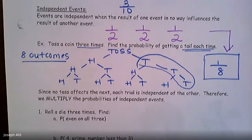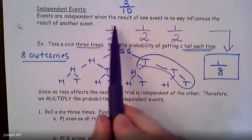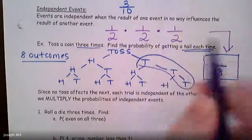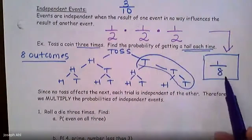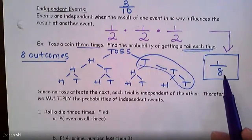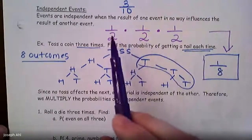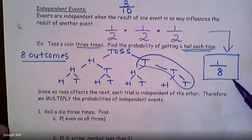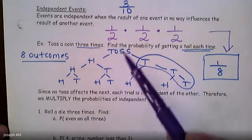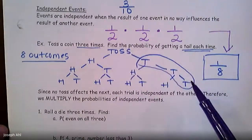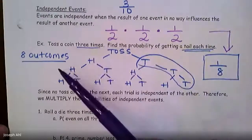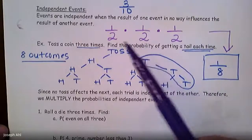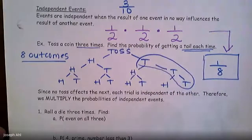If you multiply all the tops and then multiply all the bottoms — one times one times one is one, and two times two times two is eight — it turns out that when events are independent, you can multiply the probability of each event occurring and that will give you your total probability. So rather than making a tree diagram, you can simply take the probability of each event and multiply them together.